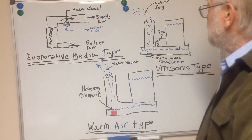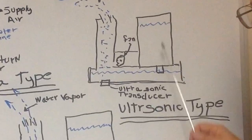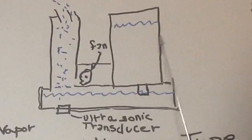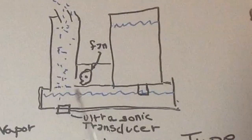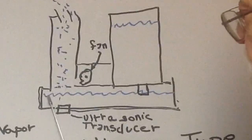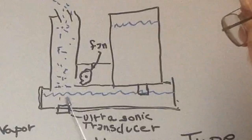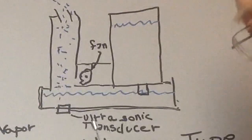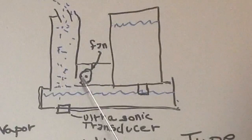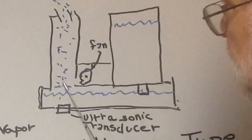The second type is the ultrasonic humidifier. This rectangle in the sketch represents water storage — it holds about a gallon, maybe a gallon and a quarter depending on the unit. It sits on a base that allows water to flow into a basin. It has an ultrasonic transducer with an electronic circuit board that drives it, producing a fog by mechanically breaking down water into microscopic-size particles.